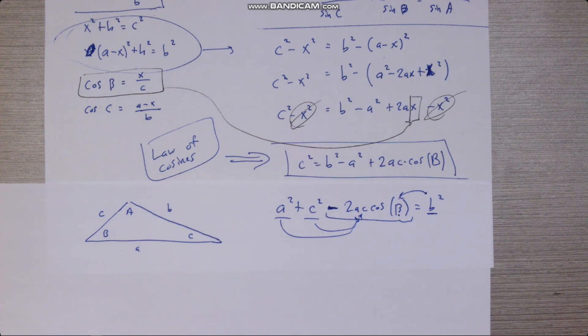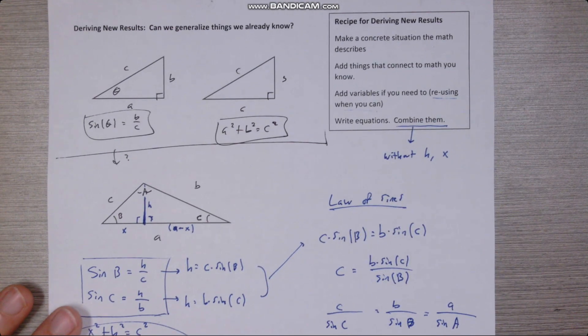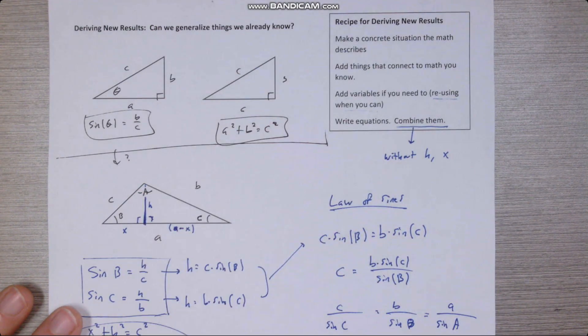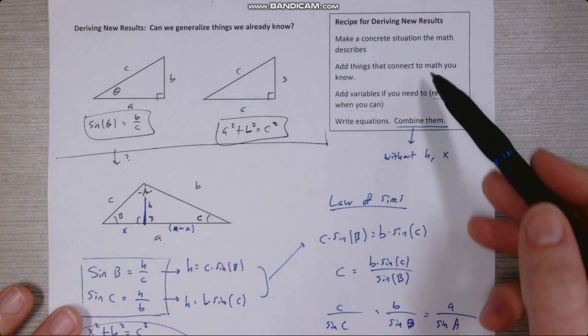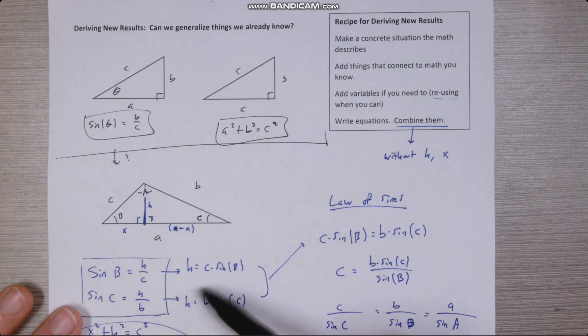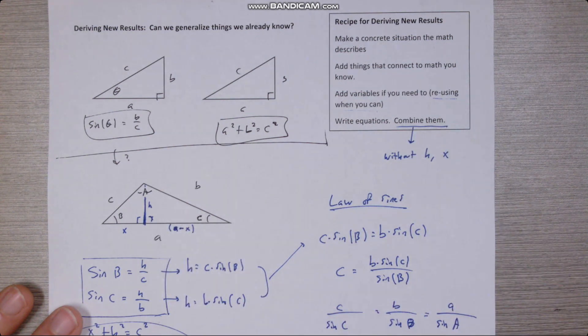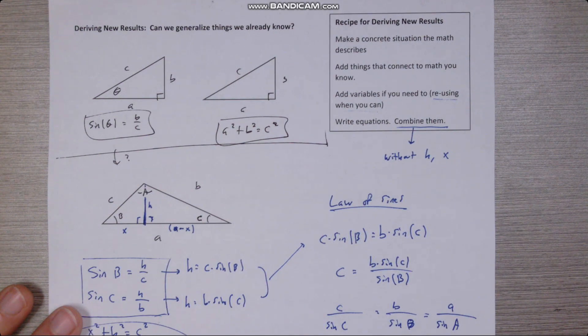Okay, so I hope that the original recipe has made it clear how it's possible to derive new results if you add things that let you connect in math you know, write a bunch of facts, and then combine them trying to eliminate the things that you'd originally added. Next time we'll see how we can extend this to prove even more significant results.